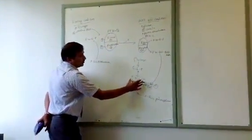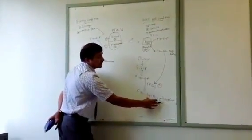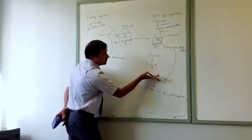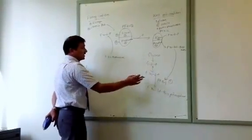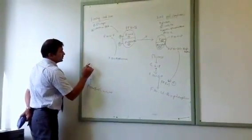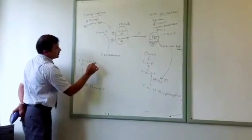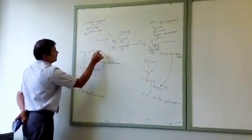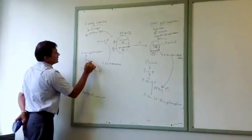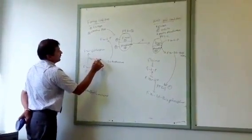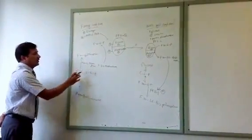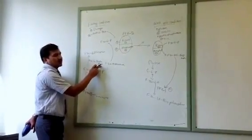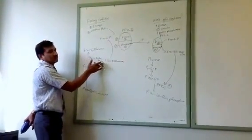One of the irreversible reactions in glycolysis is the conversion of fructose 6-phosphate to fructose 1,6-bisphosphate, which is unidirectional. To reverse this in gluconeogenesis — taking fructose 1,6-bisphosphate back to fructose 6-phosphate — a separate enzyme is required: fructose 1,6-bisphosphatase, which catalyzes exactly this reverse conversion.